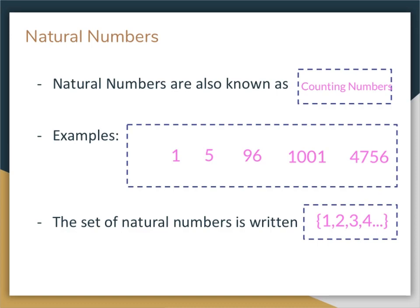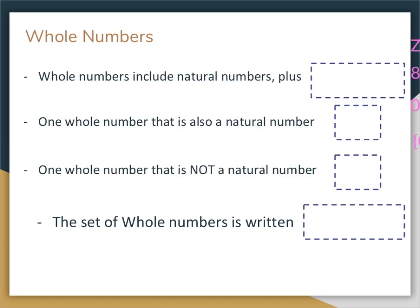Whole numbers include natural numbers plus zero. One whole number that is also a natural number — for example, eight, or 4,796. One whole number that is not a natural number, however, is zero. Zero is the only whole number that is not a natural number. The set of whole numbers is written as {0, 1, 2, 3, ...} with dots going on forever and then the end brace. Notice with whole numbers we've got no negatives, no decimals, no fractions, no repeating decimals — whole numbers are just the natural numbers plus zero.